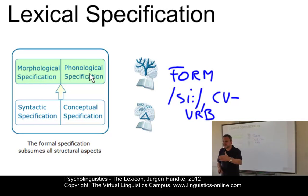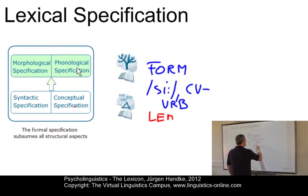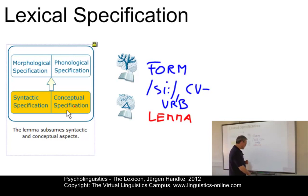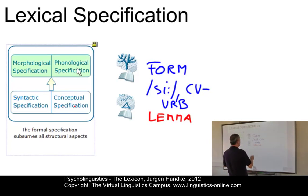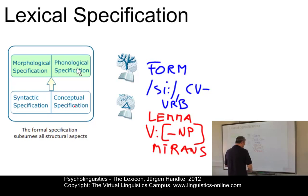Then we have a second level: the level of context-related aspects, that is the lemma. The lemma is associated with aspects like syntax, the conceptual representation, and semantic information. For example, in the case of SEE, we have the fact that it is a verb which requires an object — the typical subcategorization frame — or a conceptual representation in terms of a primitive which requires some arguments.